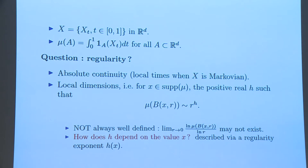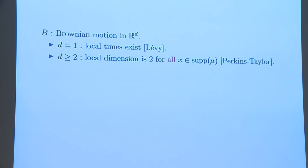First of all, it is not always well-defined because this limit may not exist. And another observation is that for many measures, it might happen that this exponent H may depend on the position of this X.